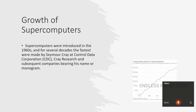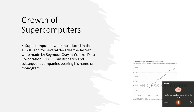So, what is a supercomputer? A supercomputer is a powerful computer that is designed to solve complex problems and perform calculations at very high speeds. They are used for a wide range of applications including scientific research, weather forecasting, medical research, and engineering. Supercomputers are able to perform calculations and analyze data much faster than traditional computers, which makes them useful for tasks that require massive amounts of processing power.